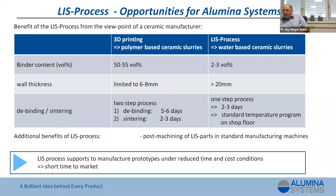The high binder content in LCM leads to a wall thickness limitation of 6–8 mm. With the LIS process, we have already achieved wall thicknesses greater than 20 mm. For LCM, debinding and sintering is a two-step process requiring 5–6 days for debinding and 2–3 days for sintering. In the LIS process, because the slurry is very similar to our standard slip-casting masses, it is a one-step process with a process time of only 2–3 days, and we can use standard temperature programs on the shop floor.